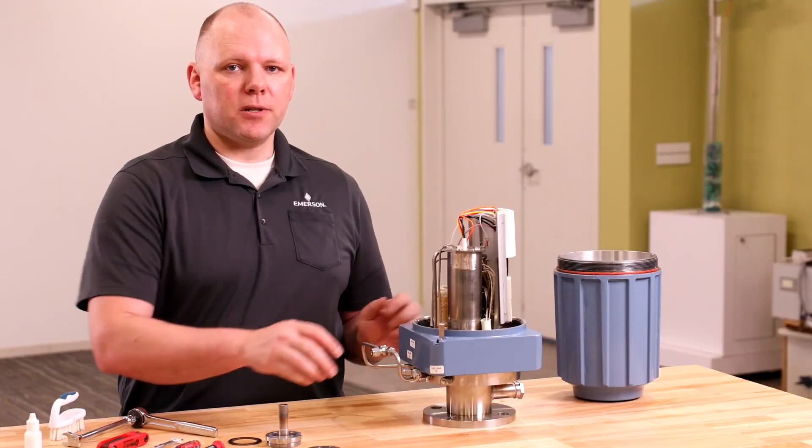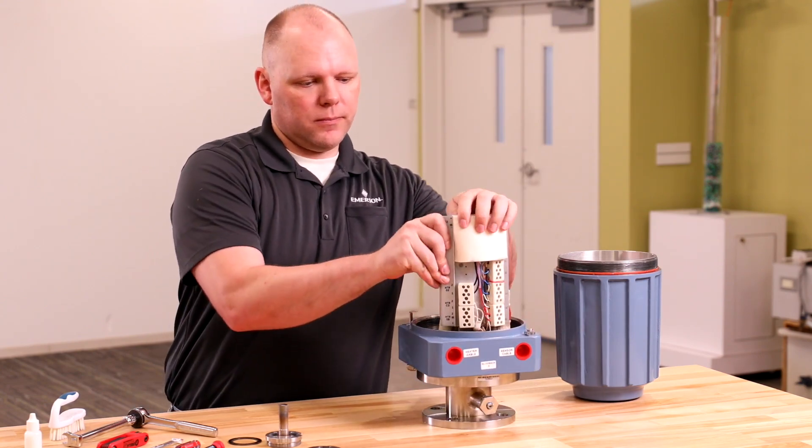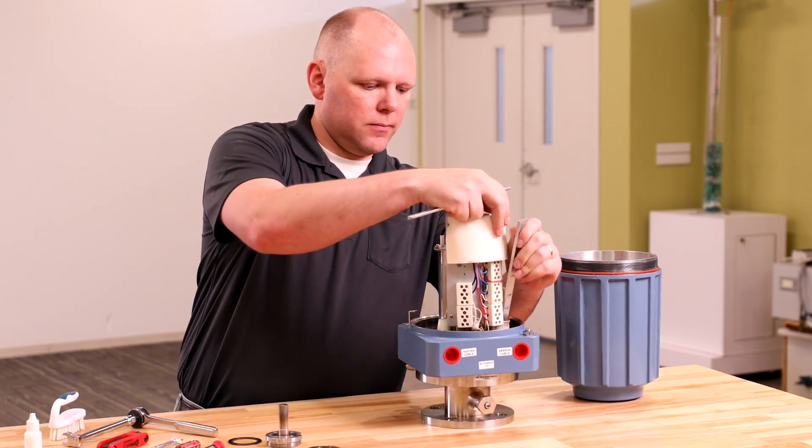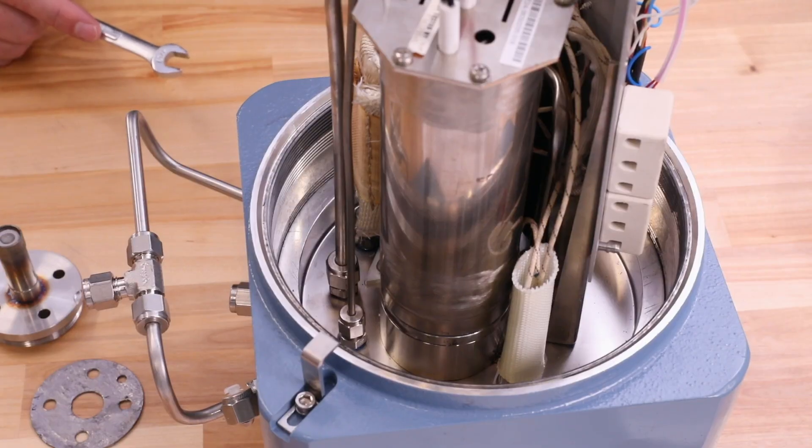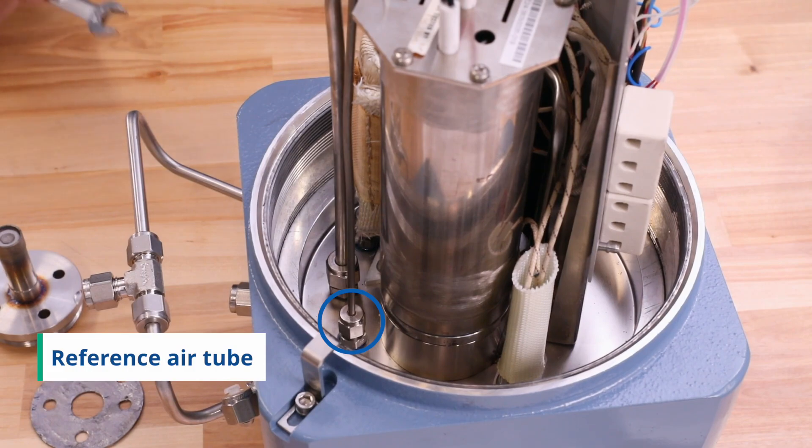Next, unsnap the terminal marking plates and remove the terminal insulator. Then remove the reference air tube from the sensor housing with a 7/16th wrench.